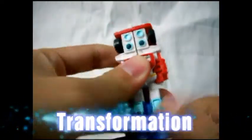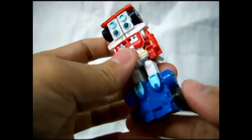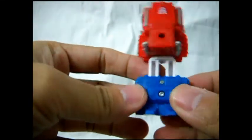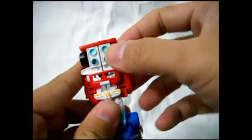In order to transform him, take this down. This will form the legs. As you know, there's no articulation on the legs, just a G1 type of transformation.